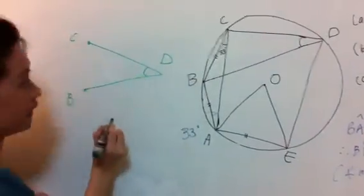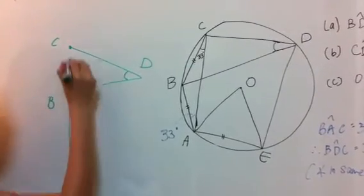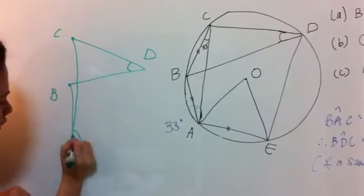BDC is the angle that we are trying to find. And again, these two points also extend to another point on the circumference. This is an A, okay?